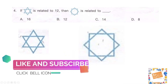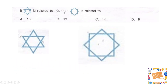Our next question: if a star figure is related to 12, then the other figure is related to what? Is it option A — 16, option B — 12, option C — 14, or option D — 8? Why don't you guys give it a try?